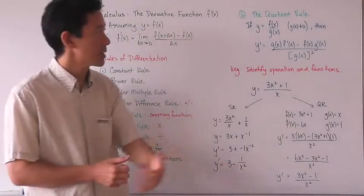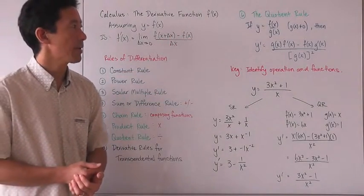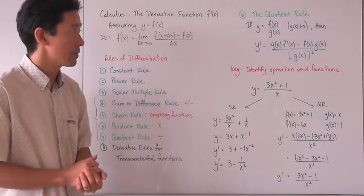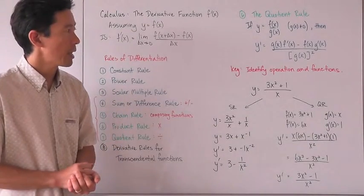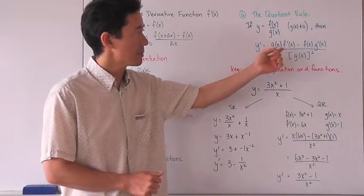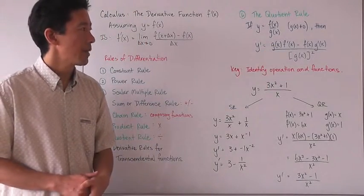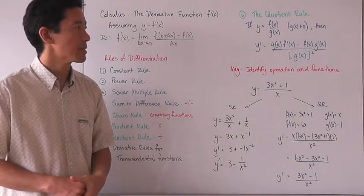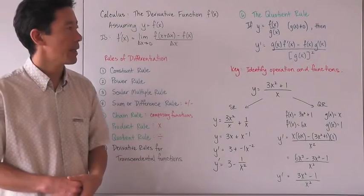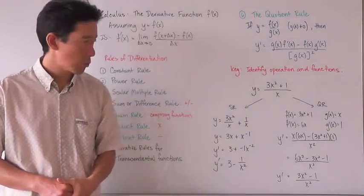Here's the quotient rule. It says that if y is equal to f of x over g of x, where g of x is not equal to zero, then y prime is going to be g of x times f prime of x minus f of x times g prime of x, all divided by the g of x function squared.